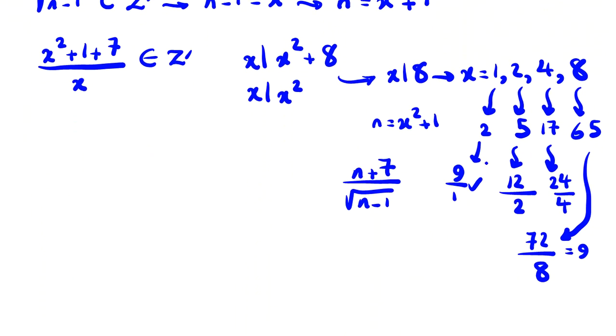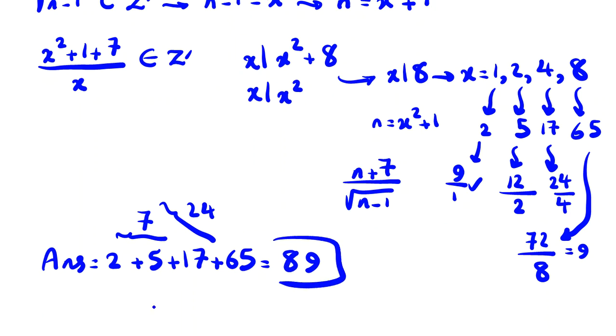The problem says what? Find, compute the sum of all positive integers n. So the answer is 2 plus 5 plus 17 plus 65 which equals what? It's 7, it's 24, it's 89. So the answer is equal to 89.